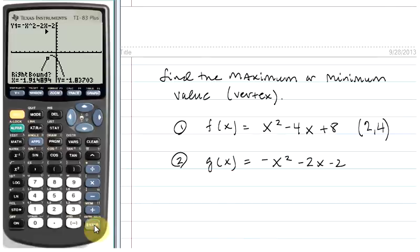And then I'm going to do the same thing for the right bound. I'm going to move the cursor over so that it is close to that vertex or maximum value, but definitely to the right of it. And then click enter.